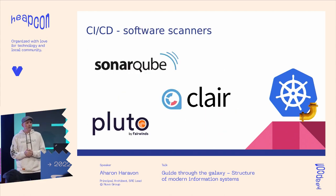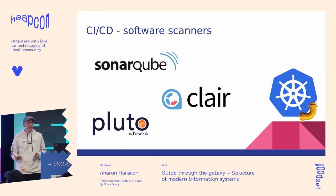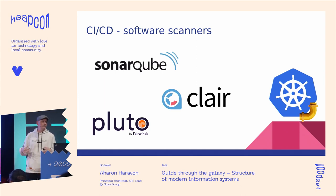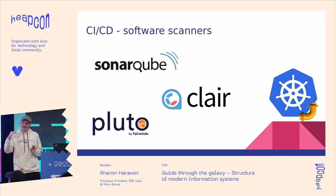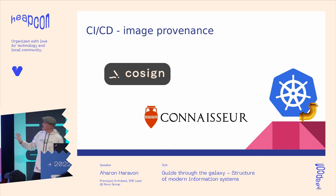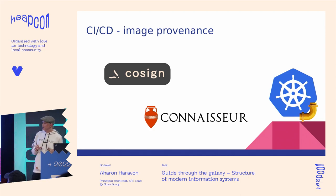SonarQube Community Edition will perform static code analysis of your code to allow early detection of code quality and security issues. Another open source project called Clair will scan your containers for operating system packages with reported vulnerabilities like CVEs. Pluto is a lifesaver tool when you're planning a Kubernetes upgrade — it will scan your installed Kubernetes Helm charts and warn you about usage of obsolete APIs in following versions, so make sure to run it before you upgrade your cluster. Cosign can be used for signing and verification of container image provenance within CI. And Connaisseur can be used for origin-related policy enforcement within your cluster.